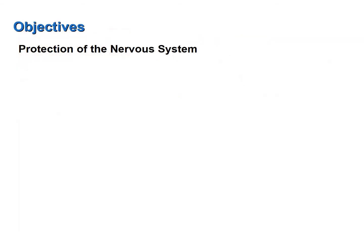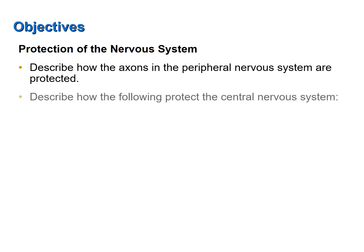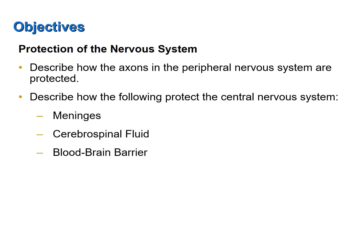Now let's review the objectives of this screencast. Describe how the axons in the peripheral nervous system are protected. Describe how the following protect the central nervous system: meninges, cerebrospinal fluid, and the blood-brain barrier.